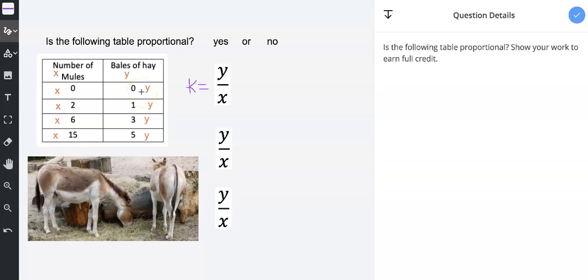And this first point, 0, 0, it's okay for it to contain 0, 0, but we can't use that to find the unit rate. So I'm going to go ahead and move on to the second point, which is 2, 1.